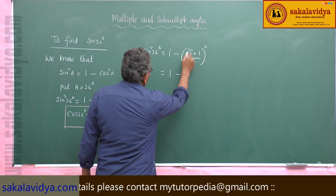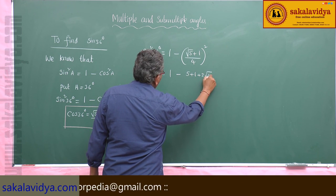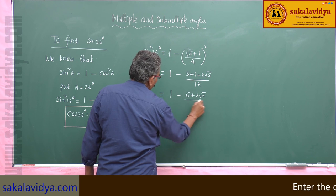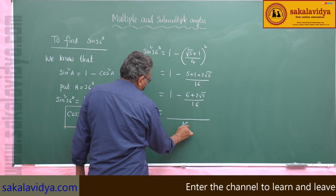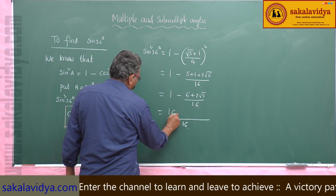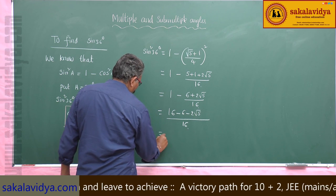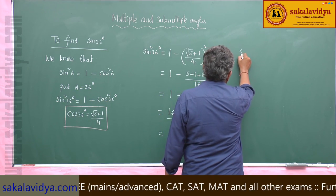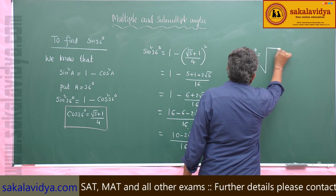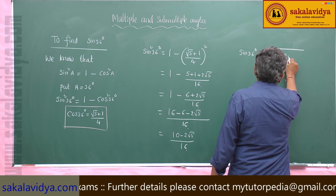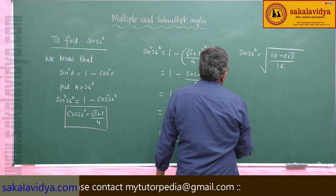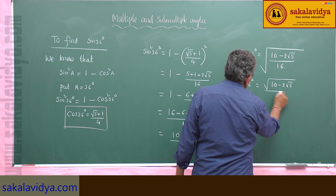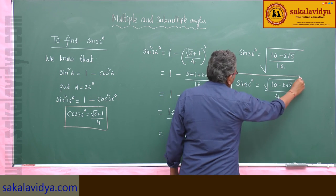This can be written as 1 minus (5 plus 1 plus 2√5) divided by 16, which is 1 minus (6 plus 2√5) divided by 16. With LCM 16, this is (16 minus 6 minus 2√5) divided by 16, giving (10 minus 2√5) divided by 16. Therefore sin 36 degrees is equal to the square root of (10 minus 2√5) divided by 4.